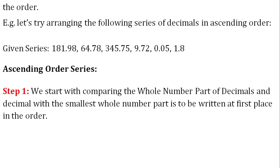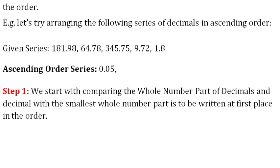Step 1: We start with comparing the whole number part of decimals, and the decimal with the smallest whole number part is to be written at first place in the order. We get 0 as the smallest whole number part, belonging to decimal 0.05 from the given series. So it is written at the first place. Ascending order series: 0.05.